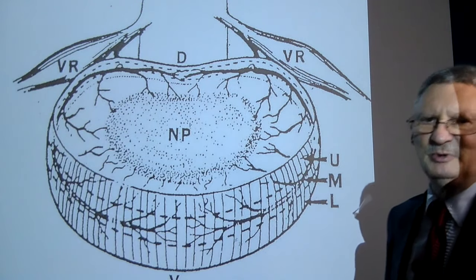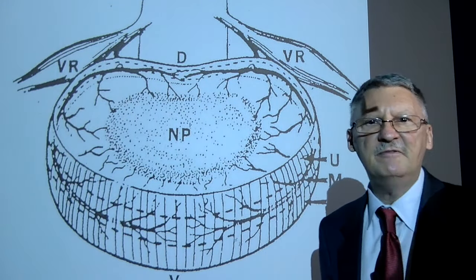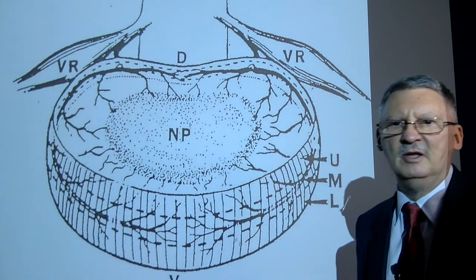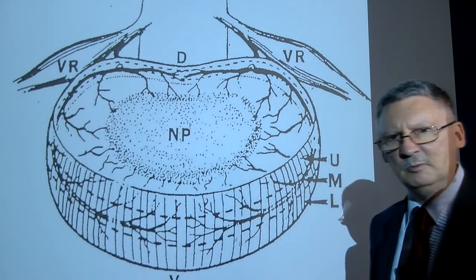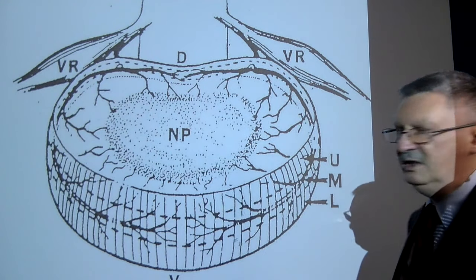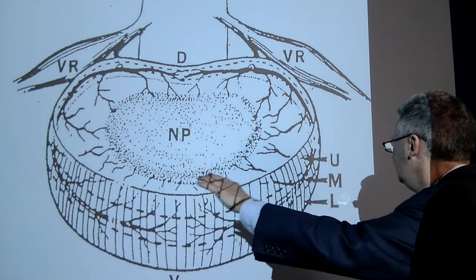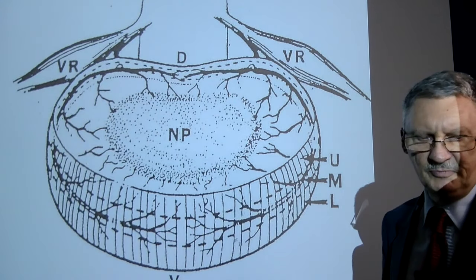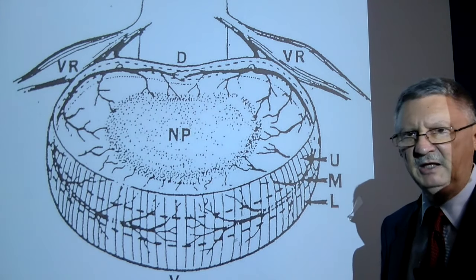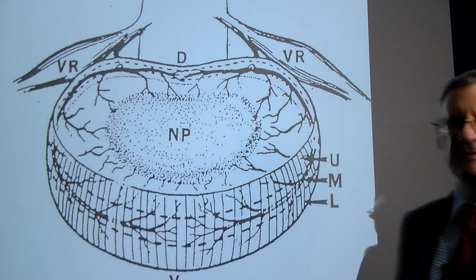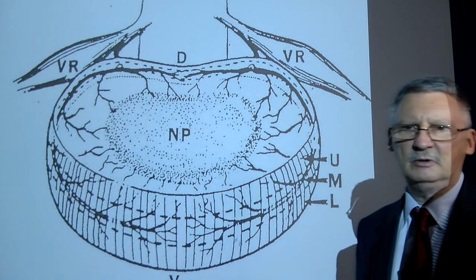When I was a student, we were taught that the intervertebral disc was avascular and aneural — that it did not have a direct nerve supply or blood supply. Today we know that the outer annulus particularly is well endowed with nociceptive fibers capable of sensing pain, and that disruption of the intervertebral disc in and of itself is at least potentially a pain generator.